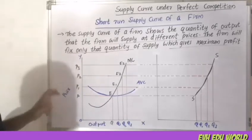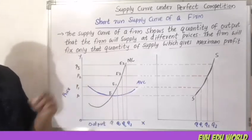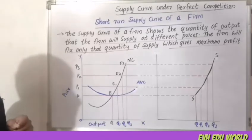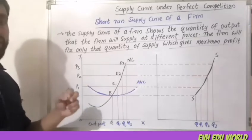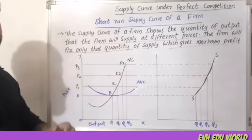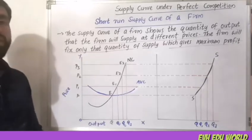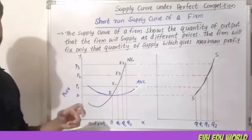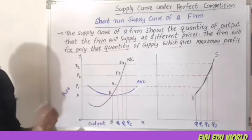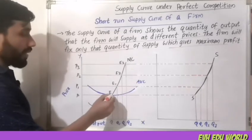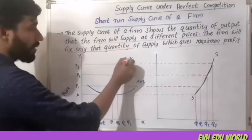In the case of the firm, the equilibrium point is where marginal cost equals marginal revenue. The marginal cost curve intersects the MR curve, and the equilibrium point is equal to the MC curve.